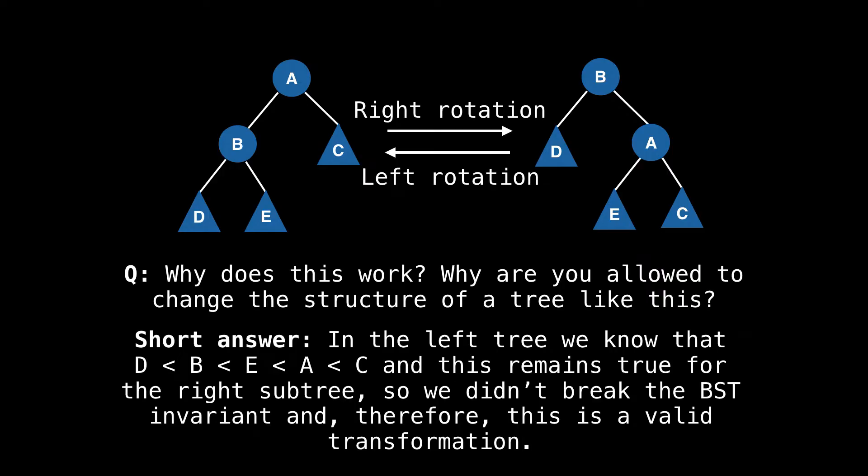Suppose our invariant is not satisfied, and to fix it, we need to do a right rotation about node A. Assuming node A has a left child B, we can perform a right rotation to put B where node A was and push node A down to become B's right child.